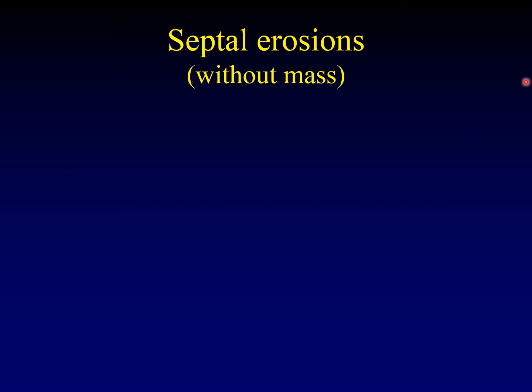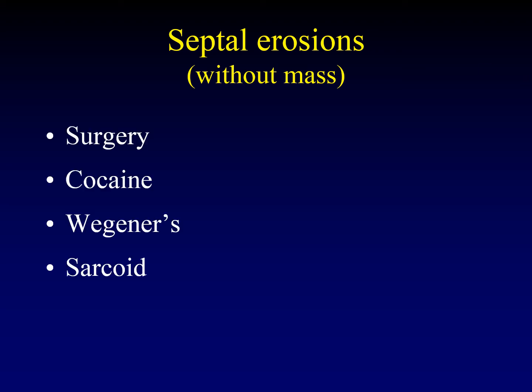New differential: septal erosions without a mass. Probably the most common cause is prior surgery — whether surgery on the septum itself or a FESS, you can end up with intentional or inadvertent holes in the septum. Famously, cocaine causes septal erosions — it is a vasoconstrictor, and that arterial constriction can result in necrosis of the mucosa overlying the septum, with subsequent bone erosion. Wegener's granulomatosis — now preferred as granulomatosis with polyangiitis — is another famous cause of septal erosions. Sarcoid is a mimic of Wegener's, less common but can look exactly the same.